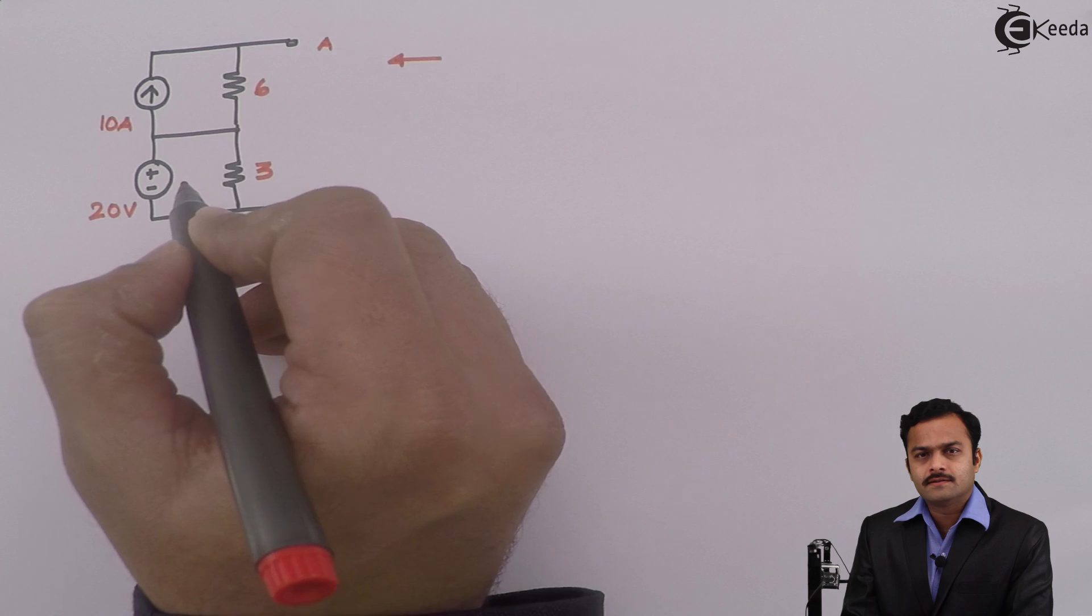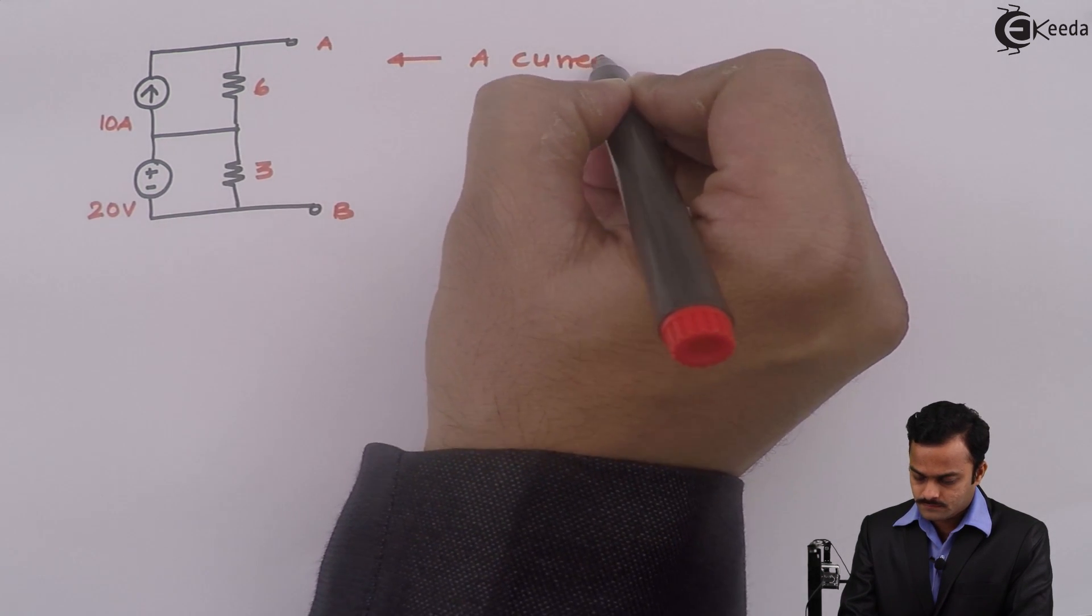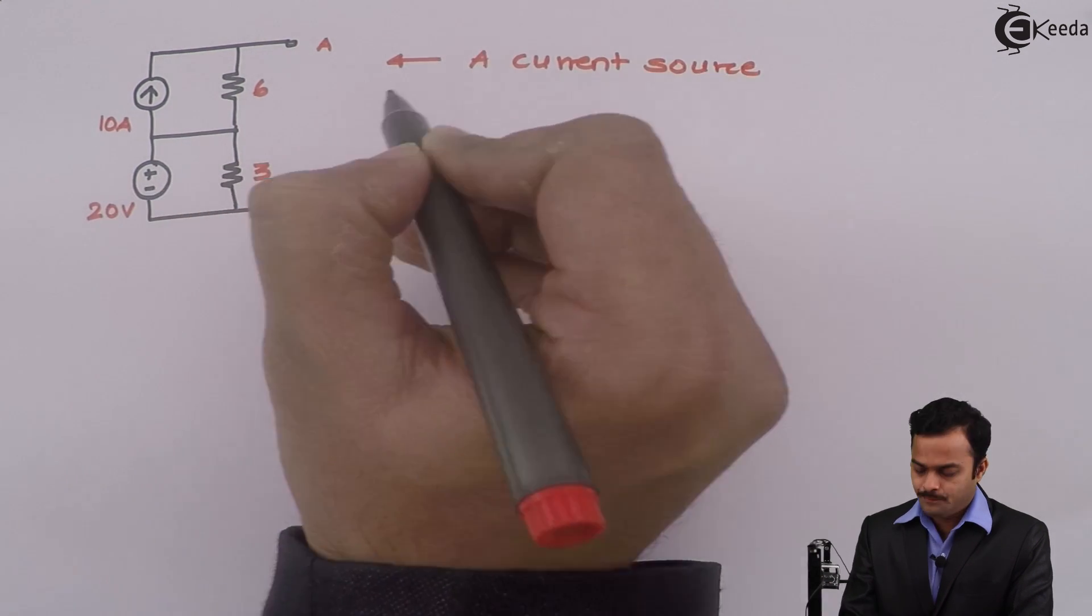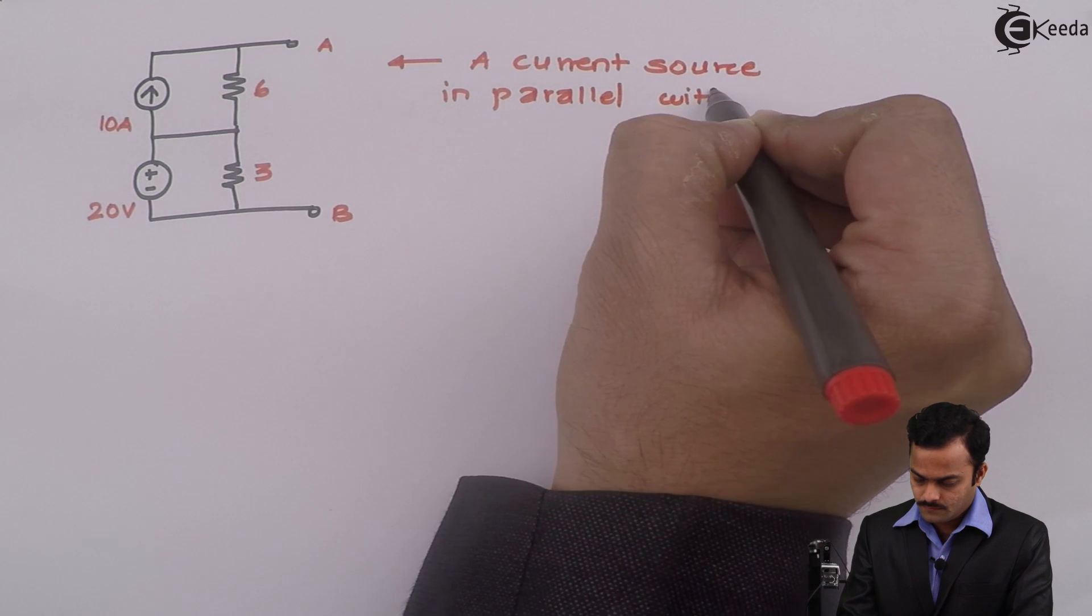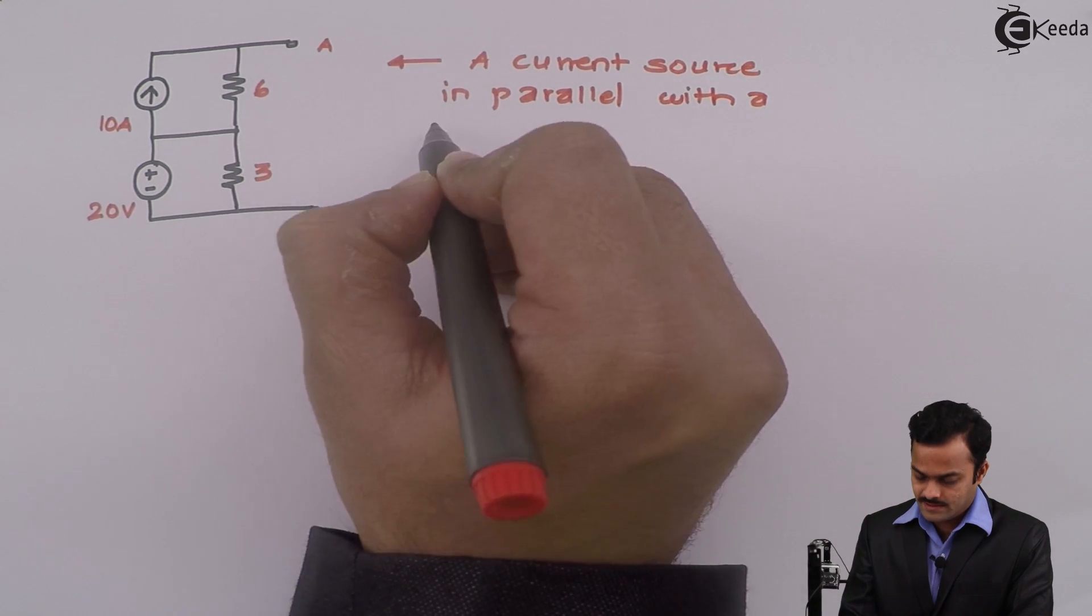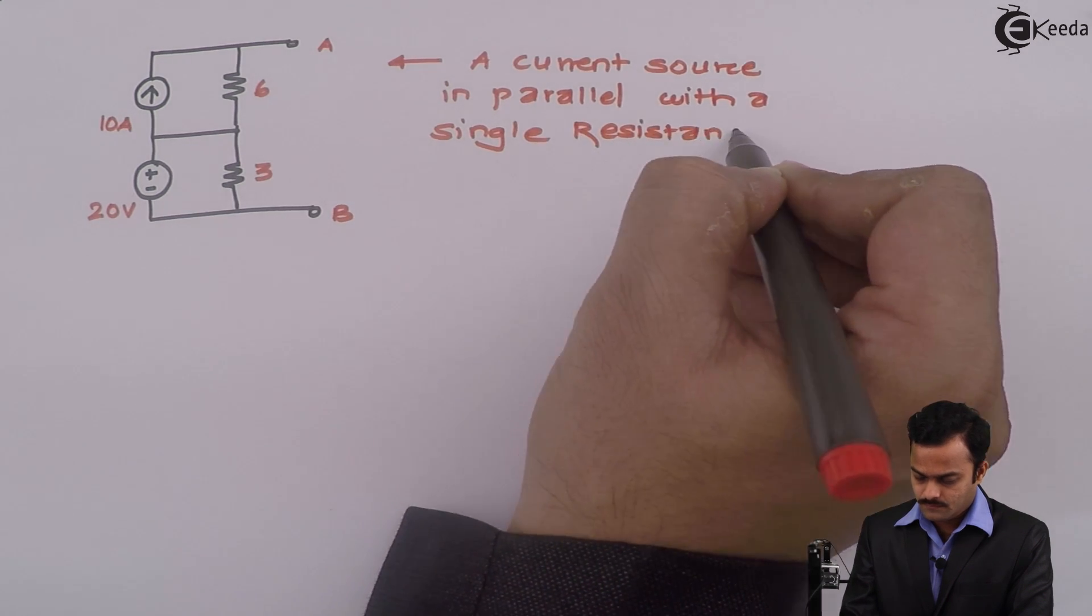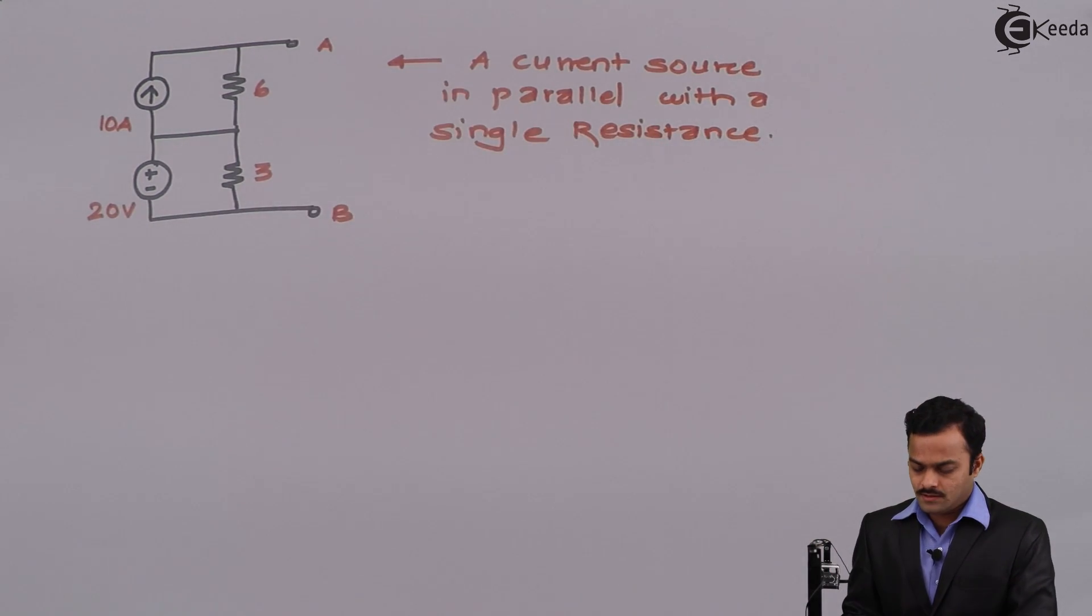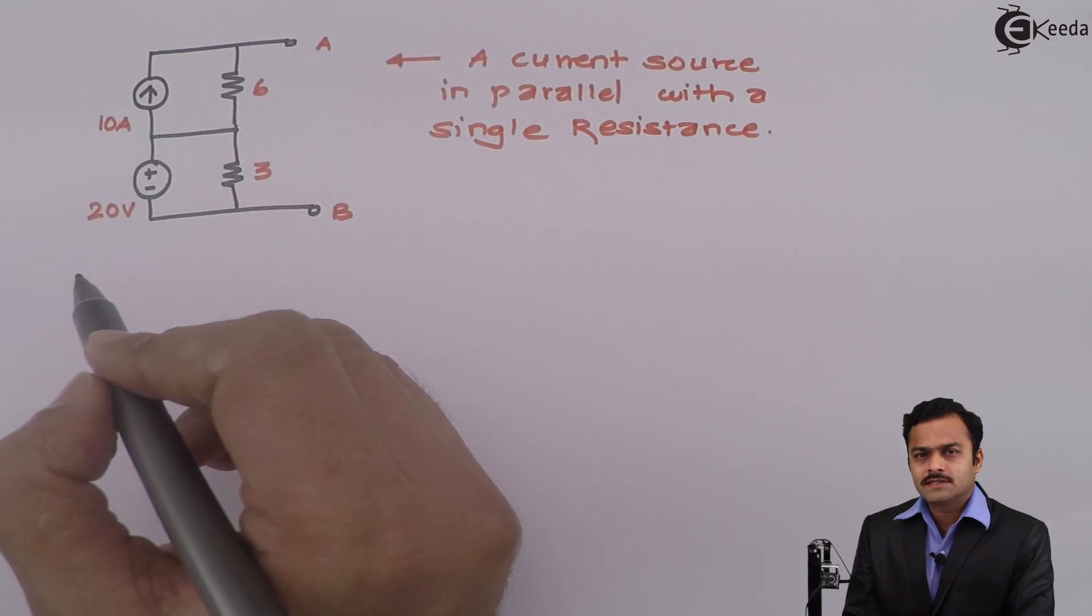I have to open terminals A and B across which I need to replace this circuit by a current source in parallel with a single resistance. In other words, I need to replace this circuit as a Norton equivalent circuit.